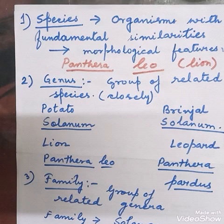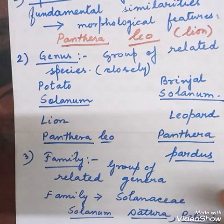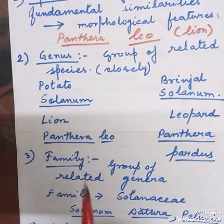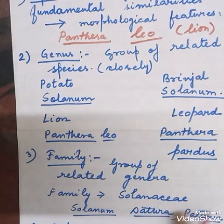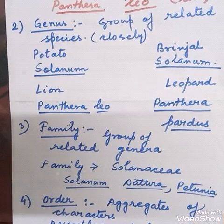The next upper category is family. A group of related genera comes together to form a family. For example, the family Solanaceae includes three different types of plants — Solanum, Datura, and Petunia — all coming under the same family Solanaceae. The family constitutes a group of related genera.